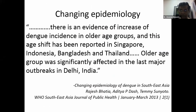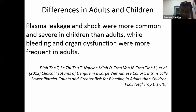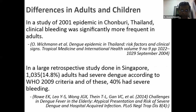This has been noted in other countries too, in countries like Indonesia, Bangladesh, Thailand, and India. When we compare children and adults, there have been many studies. A study from Vietnam shows that plasma leakage and shock were more common and severe in children than adults, while bleeding and organ dysfunction were more frequent in adults. We see a similar picture, and in Thailand they found that bleeding is significantly more frequent in adults.